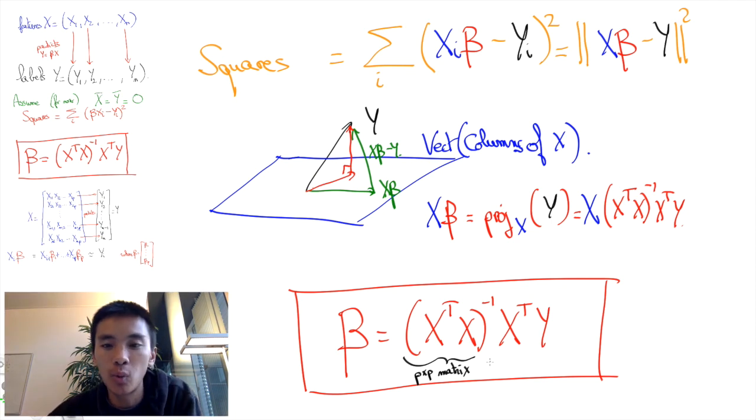Finally, let me just quickly address the one assumption that we made early on: the fact that we needed to assume that ȳ = x̄ = 0. To circumvent this issue, it's very simple, basically.